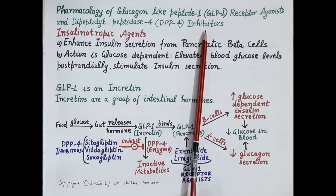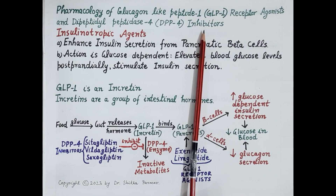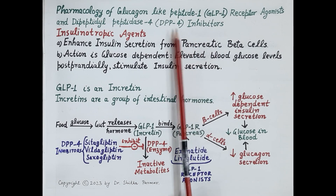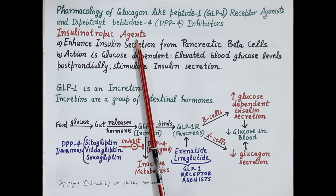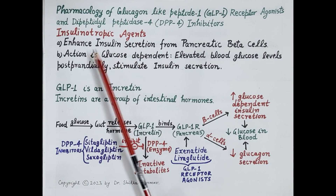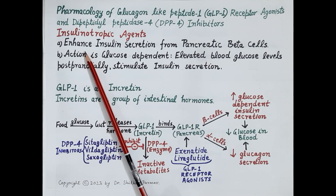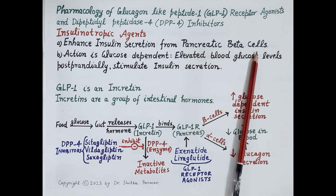Type 2 diabetes mellitus is characterized by hyperglycemia, that is increase in the concentration of glucose in the blood. Type 2 diabetes mellitus is caused either due to reduced functioning of insulin, that is insulin resistance, or due to reduced secretion of insulin, or both. GLP-1 receptor agonist and dipeptidyl peptidase 4 inhibitors are insulinotropic agents, so these drugs increase insulin secretion from pancreatic beta cells.